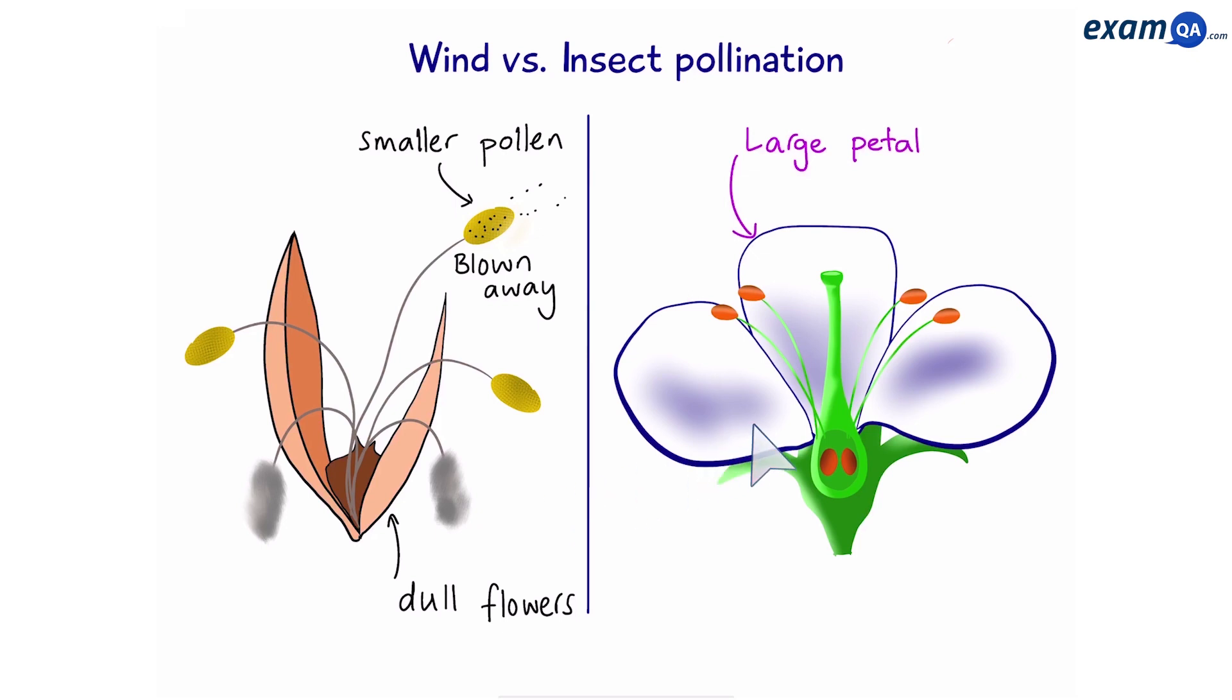On the other hand, insect pollinated flowers have large petals with bright colors. They give off a pleasant scent to attract insects and also have glands called nectarines, which produce delicious nectar for insects to eat. All of these motivates insects, and as a result, they will come and bring their pollen with them.